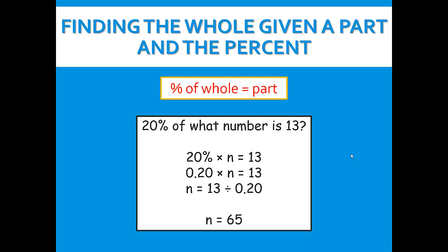Now we can divide 13 by 0.20. We're going to move our decimal two places to the right to make 20 hundredths a whole number — 1, 2. So we're going to do the same for 13 — 1, 2. Now we're going to divide.